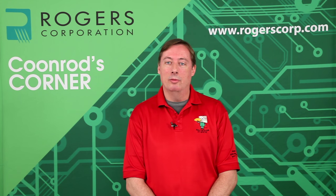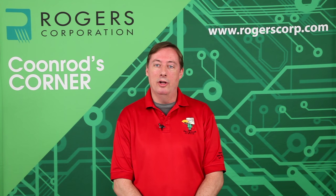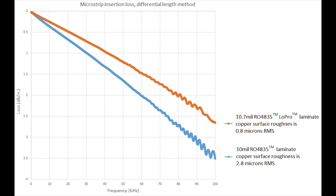The coppers we use in our high frequency laminates are very good for high frequency, low loss applications and are non-ferromagnetic, which avoids issues with PIM. The chart shown here covers testing from about 10 megahertz to 100 gigahertz — a very wide band. We're looking at microstrip insertion loss using the differential length method, which tests circuits identical in every way except one being shorter, then subtracts losses to get loss in dB per inch. The smoothest copper shown — on the 10.7 mil RO4835 low pro laminate — has a roughness of about 0.8 microns RMS and shows the lowest insertion loss all the way out to 100 GHz. The other substrate is the same 10 mil RO4835 laminate but using standard ED copper with a rougher surface roughness of about 2.8 microns.